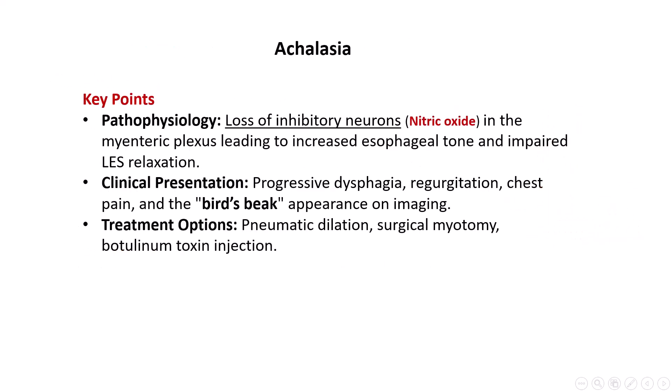In summary, achalasia is a condition that disrupts normal esophageal motility due to the loss of inhibitory neurons in the esophageal wall, leading to increased esophageal tone and impaired LES relaxation. This condition presents as dysphagia, regurgitation, and sometimes chest pain. Understanding the pathophysiology and clinical presentation of achalasia is crucial for the USMLE Step 1 exam, where this topic is frequently tested.